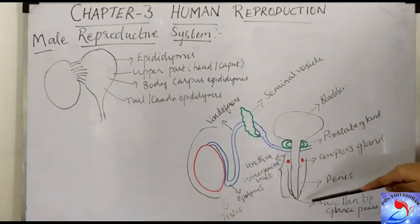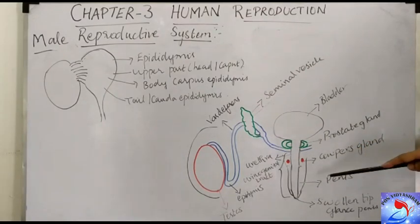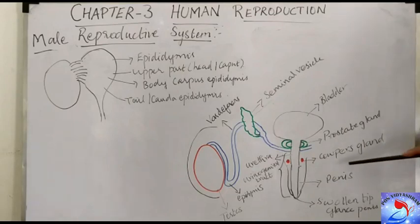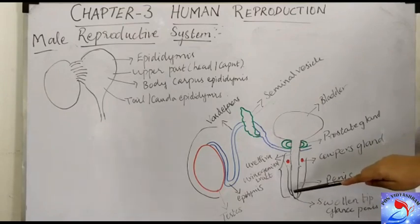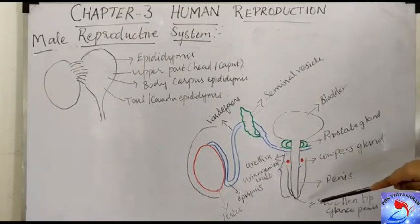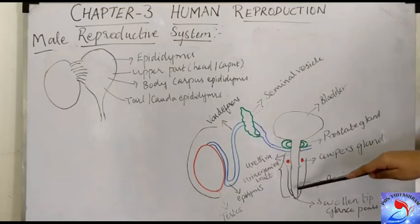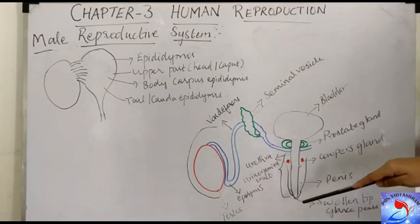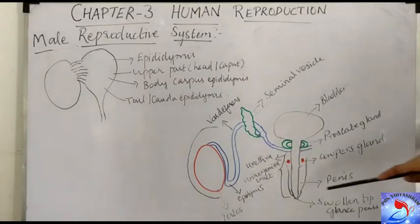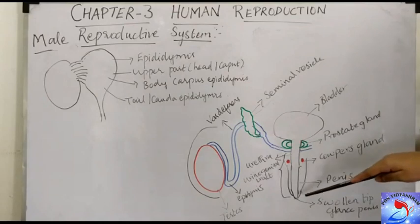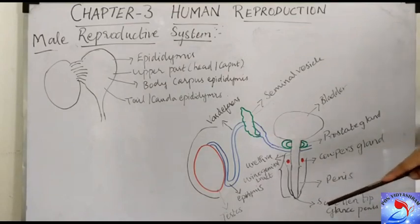The penis is the external genital organ and the copulatory organ. It is swollen at the end, with a swollen tip called the glans penis. The glans penis has a loose foreskin called the prepuce, which is very sensitive.